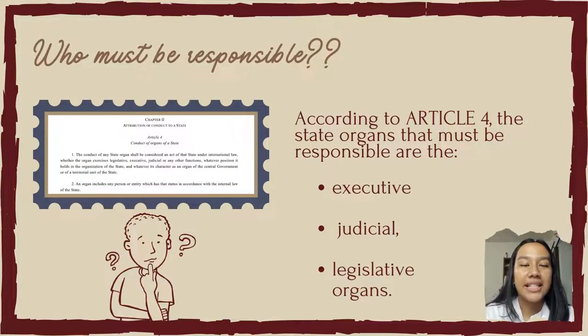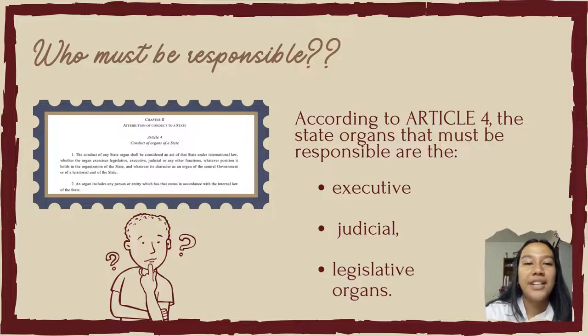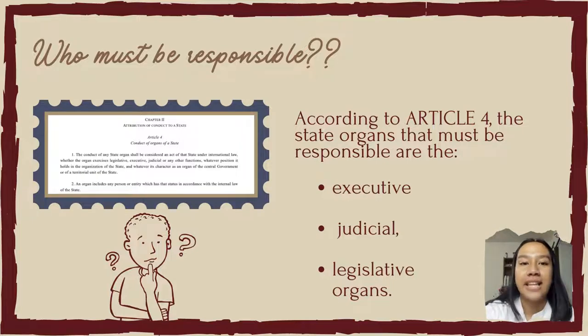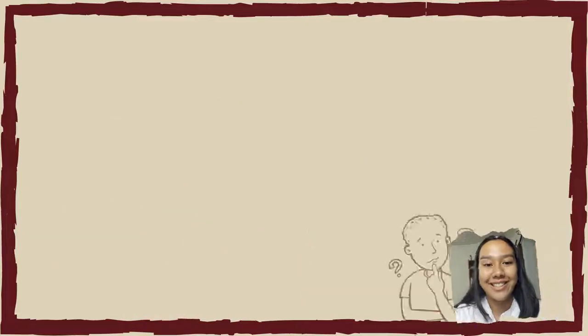Who are the state's organs that must be responsible? According to Article 4, those responsible are the executive, judicial, and legislative organs of the state, such as the police, government officials, and armed forces.